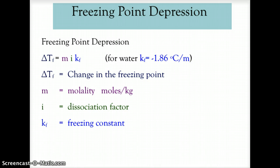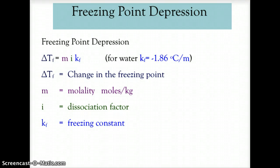To see how that change is going to affect the freezing point, we call that freezing point depression. That freezing point depression can be calculated using the formula: delta Tf, change in temperature freezing, is equal to M times i times Kf. Where M is the molality — moles of solute divided by the kilograms of solvent, not the kilograms of solution. The i is the dissociation factor, which we'll go over in just a bit. And Kf is the constant for freezing point; for water, that is always negative 1.86 degrees Celsius per molal. For other substances, values will be given in the problem or found in a data table.